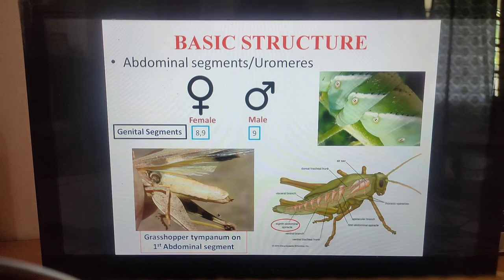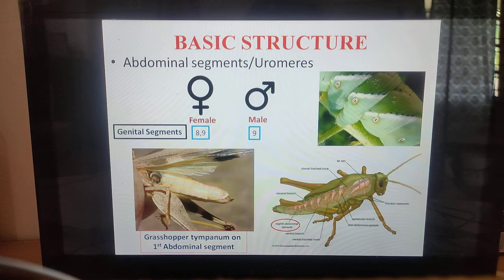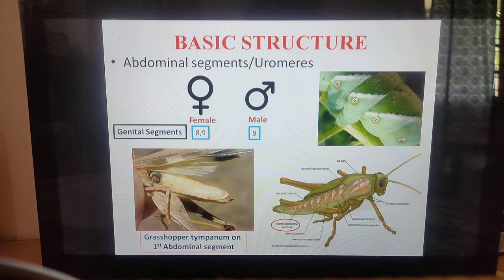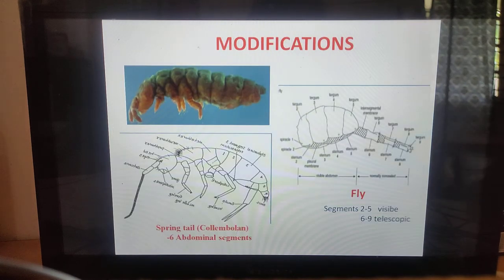Another important structure is the tympanum. In the first abdominal segment of the grasshopper, the tympanum is present and acts as an auditory organ. It is obliquely placed and connected to the metathoracic ganglion through the auditory nerve. In exams, the question asked is: the tympanum is present in grasshoppers on which segment? The answer is the first abdominal segment.